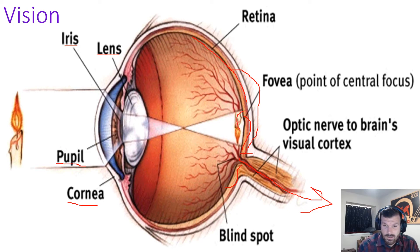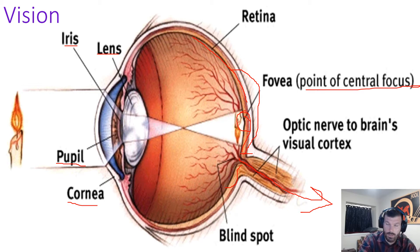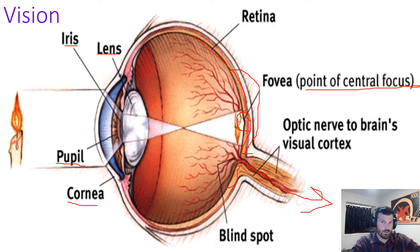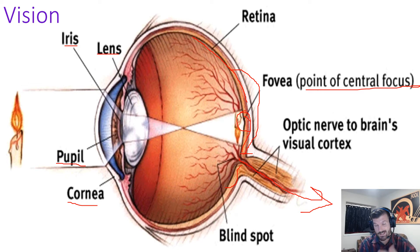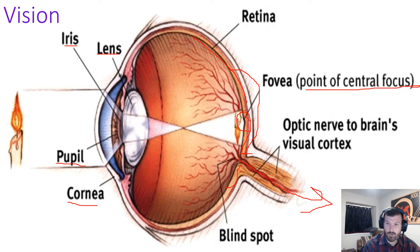The fovea is, as it says, the point of central focus. This is where your focus and attention is — so at the moment it might be on the eye diagram, or maybe you've got your phone and you're looking down at it. Everything else is kind of in the background, and the fovea is where your attention lies. So those are the major parts of the eye. Light comes in through the pupil, is refracted off the lens, hits the retina, the receptor cells pick up that information, and send it to the occipital lobe for us to process.